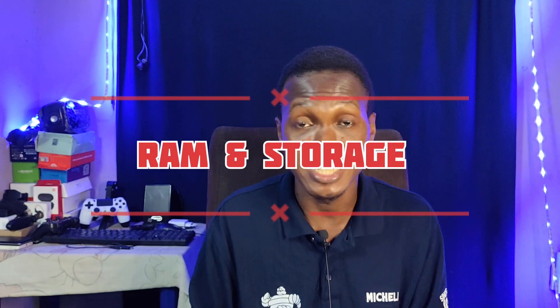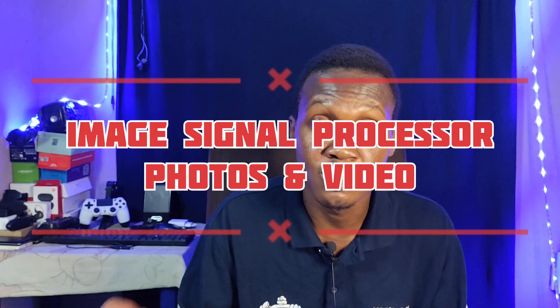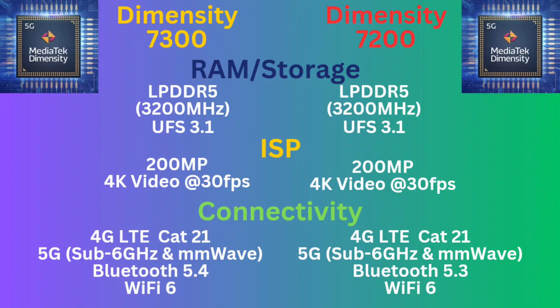For AI, the 7300 actually has a better AI engine — the APU 655 compared to the APU 650 on the 7200. When it comes to RAM and storage, they're basically tied — LPDDR5 RAM running at 3,200 MHz and UFS 3.1 storage. For the ISP, the image signal processor, they both use the same imaging processor, and they both support 1080p displays, a maximum of 200 megapixel cameras, and both record 4K video at 30 FPS. So they're tied.